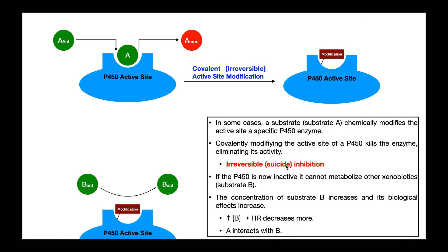Now we have the second type of inhibition: suicide or irreversible inhibition. Drug A is initially active, comes into the active site, and this P450 enzyme modifies and inactivates it. But in this reaction, while drug A is being inactivated, a piece of the drug A molecule is covalently attached to an amino acid somewhere in the active site — in other words, the enzyme is covalently modified. This piece of drug A is transferred from drug A onto an amino acid in the active site. When a critical amino acid becomes modified in the active site, the enzyme becomes inactive — it's basically dead. This modification is irreversible; it can't come off. So this enzyme is permanently dead.